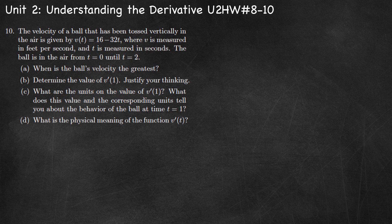Number 10: the velocity of a ball tossed vertically in the air is given by v of t equals 16 minus 32t, where v is measured in feet per second and t is measured in seconds. The ball is in the air from t equals 0 until t equals 2. Part A: when is the ball's velocity the greatest? Since the graph is a decreasing line, it's going to have its largest value at the earliest t value, so at t equals 0.